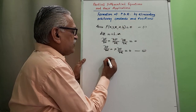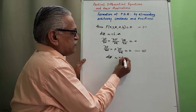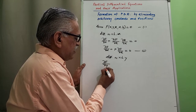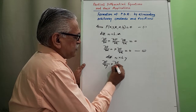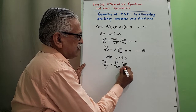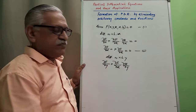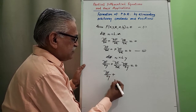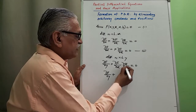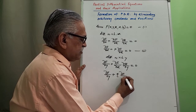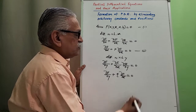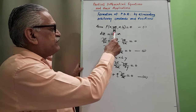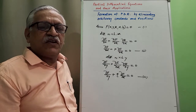Then differentiating equation 1 with respect to y, keeping x constant, we get the partial derivative of f as dou F by dou y plus q into dou F by dou z equals 0, using the chain rule. We get this as equation 3. Like this, we can develop or generate a partial differential equation.